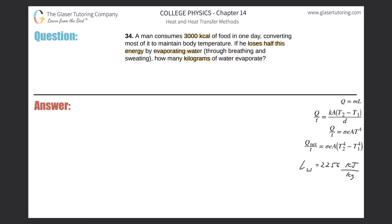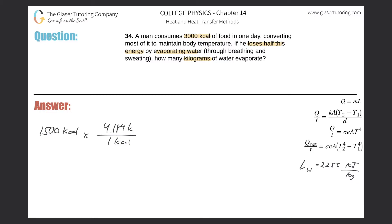They're saying he loses half of this energy by evaporating water. So half of 3,000 is going to be 1,500 kilocalories lost through evaporating water. Let's convert that into kilojoules — we don't really like to work with kilocalories. One kilocalorie is equivalent to 4.184 kilojoules.